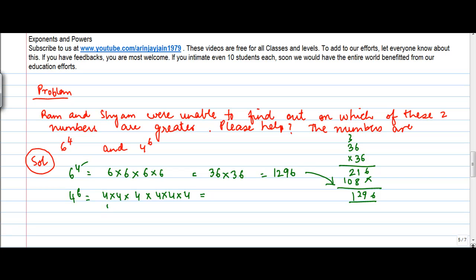Now if I see 4 to the power 6 — 4 into 4 is 16, and 16 into 4 is 64. So I can also write this as 64 into 64. Again, difficult calculation, so let me do this.